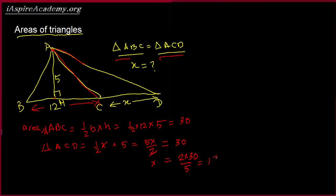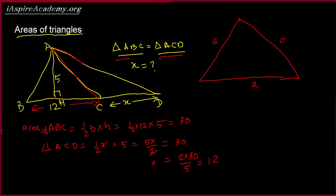So x is again 12. That's a simple problem, as long as you know base times height and have an idea how height looks for different types of triangles. Now let's solve another problem. Let's say we have an equilateral triangle, where all the sides are the same, and we have to find out the area of the triangle. We know we can find it from Heron's formula when given all the sides, but we'll solve this a little differently.